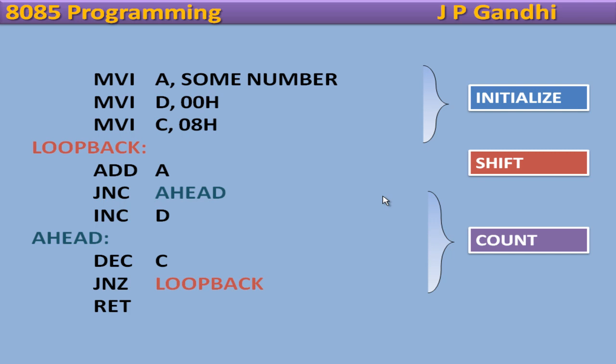Decrement C, that is decrement the bit counter, jump if not 0 to loop back. So repeat the process till the value of C becomes 0. So this explains the program to count the number of ones. So now let us directly go to the simulation program.